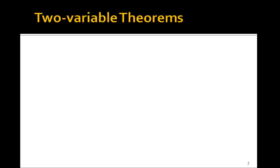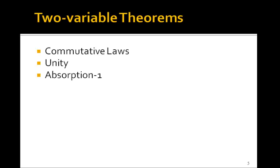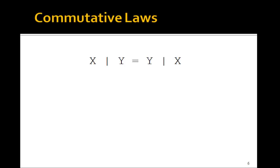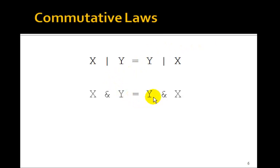Let's look at two-variable theorems now. We'll look at the commutative laws and there are two absorption theorems. The commutative laws simply mean that you can commute x and y: x OR y is equal to y OR x, and by duality, x AND y must be equal to y AND x. You can easily verify this by just looking at the truth tables.